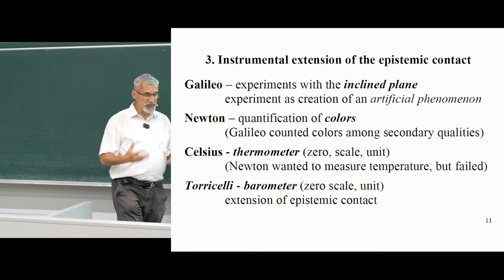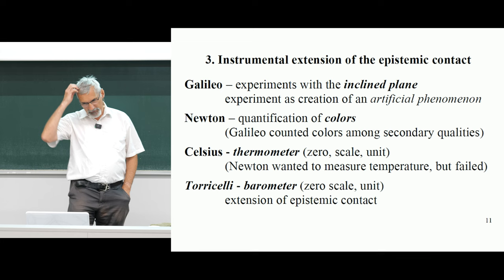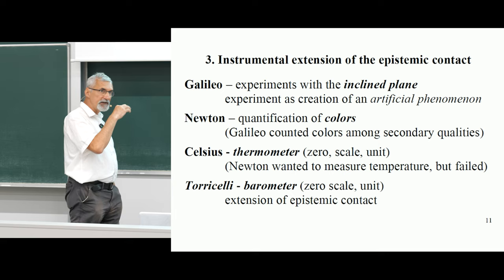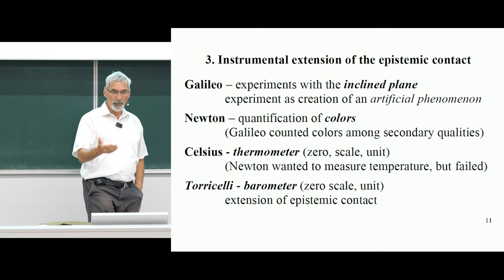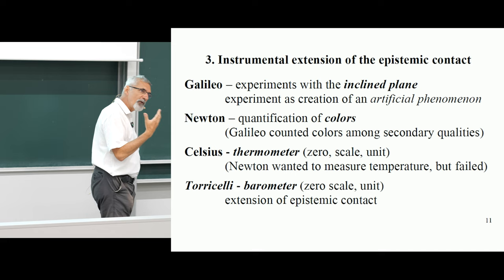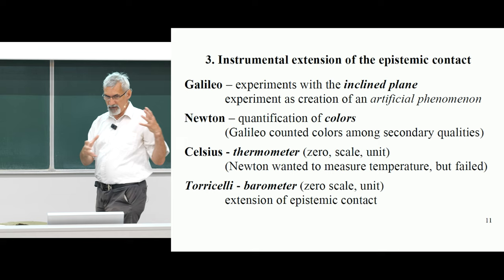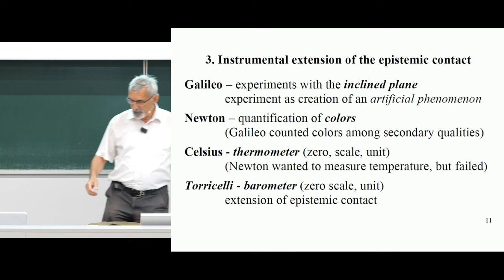Then comes Torricelli. The barometer is a strange thing, because nobody knew that there is atmospheric pressure — it was really introduced into our picture of the world by this instrument. And of course, if you don't have a thermometer and barometer, you cannot do thermodynamics. The Greeks had volume, but they didn't have temperature and they didn't have pressure, so they couldn't do thermodynamics. We see that by building instruments, we get access to phenomena, and at the end we are able to do real science — describe equations, etc.